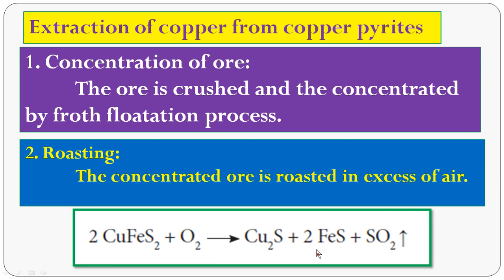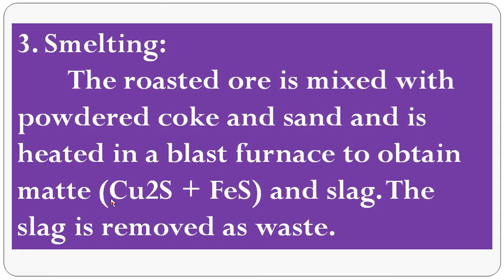The third step is smelting. The roasted ore is mixed with powdered coke (C) and sand (SiO₂) and heated in a blast furnace to obtain matte. Matte contains Cu₂S and FeS, and also slag. The slag is the waste material and is removed. The formula of matte is Cu₂S and FeS.